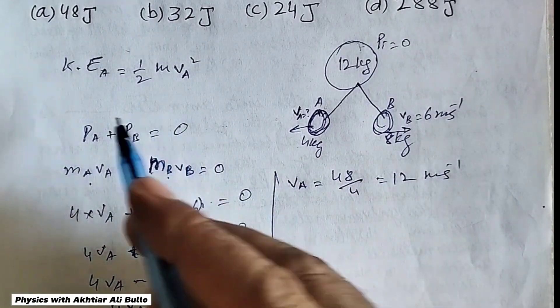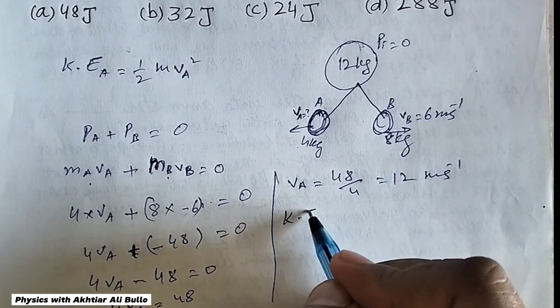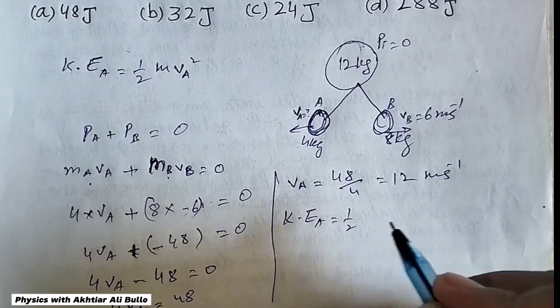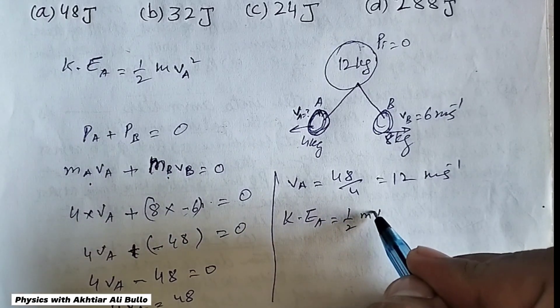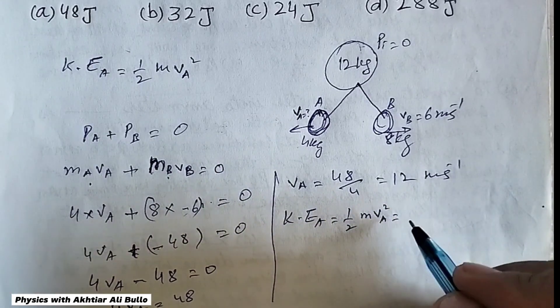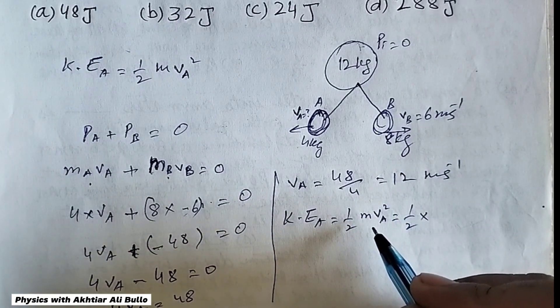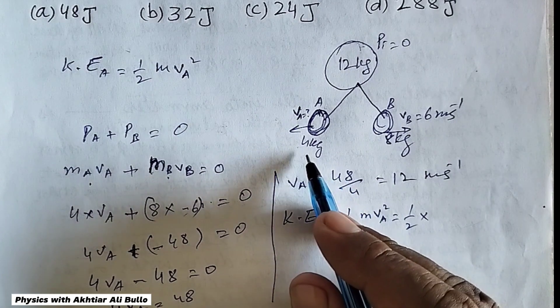Now, kinetic energy of A will be equal to 1/2 m vₐ², so 1/2 mass of A, mass of A is 4 kg.